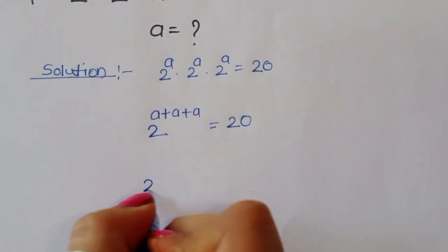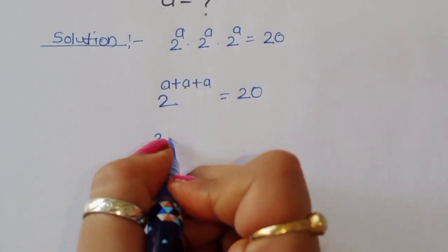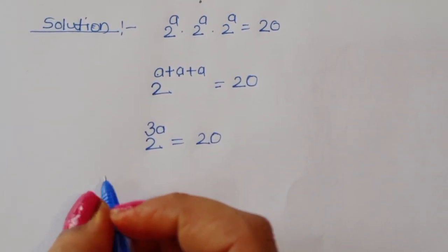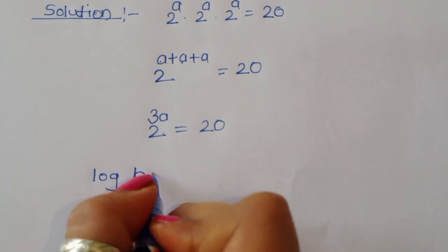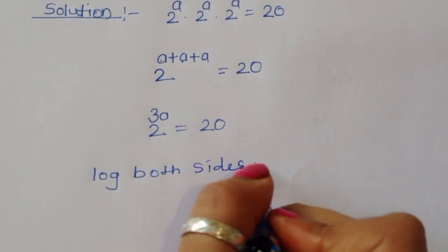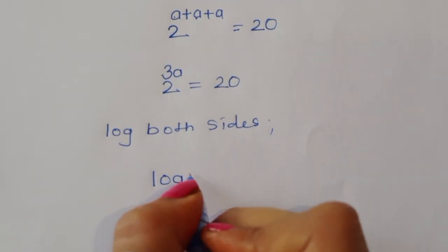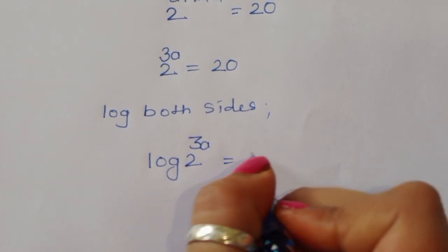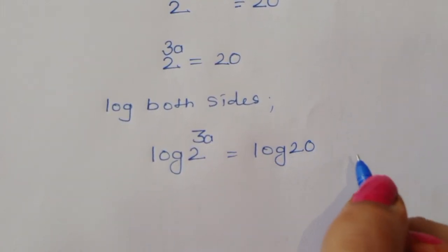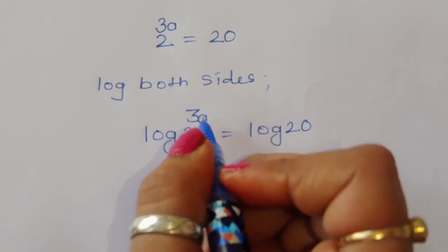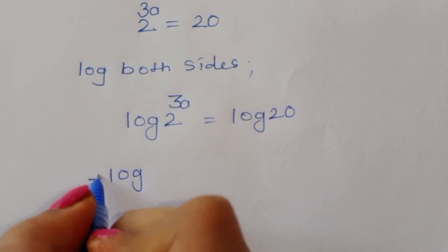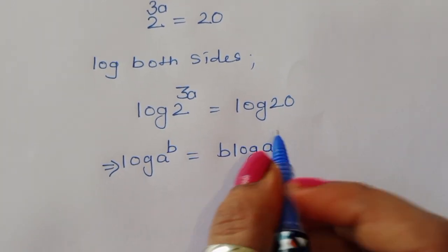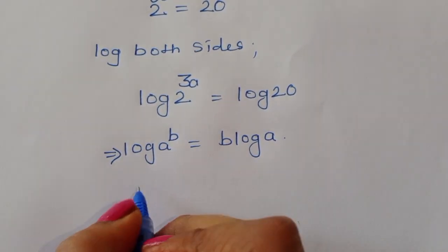Now 2 power (a plus a plus a), that is 2 power 3a, is equal to 20. Taking log of both sides, we get log of 2 power 3a is equal to log of 20. Now using the formula log of a power b equals b times log of a.